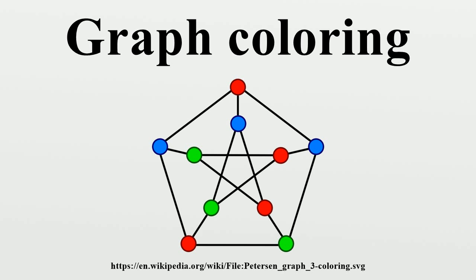Vertex coloring is the starting point of the subject, and other coloring problems can be transformed into a vertex version. For example, an edge coloring of a graph is just a vertex coloring of its line graph, and a face coloring of a plane graph is just a vertex coloring of its dual.